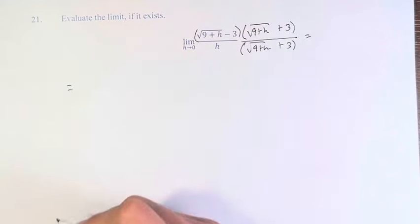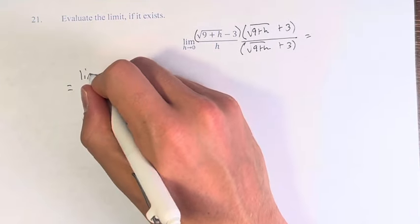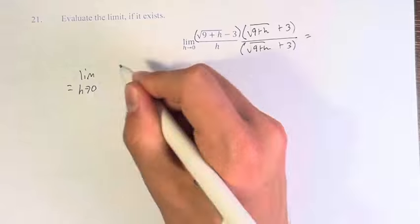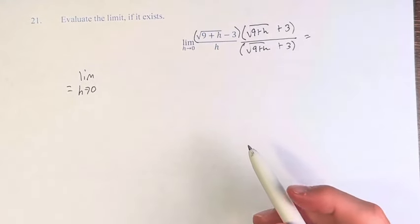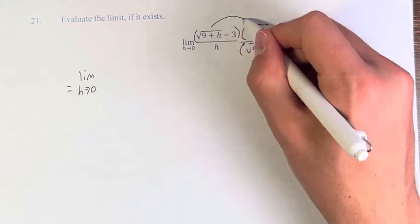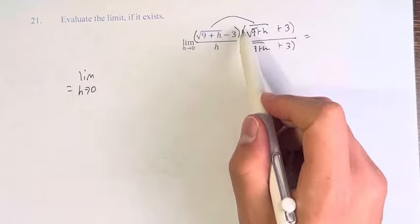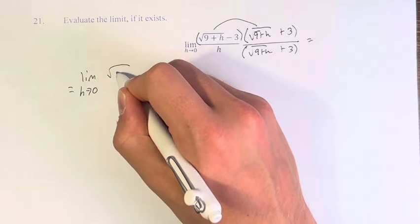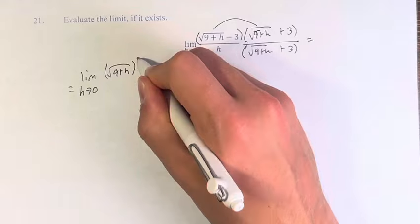The reason we do this is when we multiply these out, we have the square root of 9 plus h times the square root of 9 plus h, which gives us the square root of 9 plus h squared.